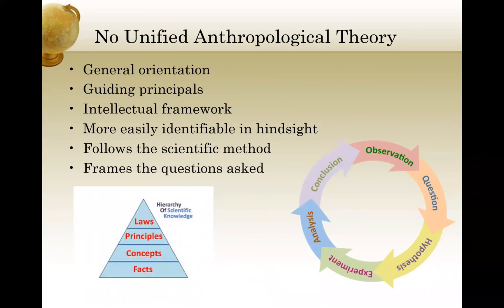You might be surprised to learn that there is no unified theory for anthropology. Theories provide a general orientation to a discipline and the course of study within that field, so a theory can act as a guiding principle. It frames the intellectual thinking around what questions may be asked. Theories can be difficult to identify in the present time — they're more readily identifiable with hindsight. Anthropology in general follows the scientific methodology established through the Western tradition of science, and the theories and paradigms that exist help frame the questions we ask and what is important for study at the time.